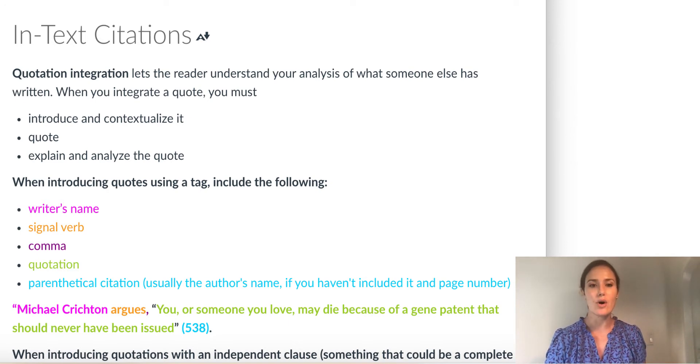When you're integrating a quote, you have to have three components. You have to introduce the quote and provide a little bit of context if necessary, tell the reader who wrote it, where it comes from if necessary. Of course, you have to include the quote itself in quotation marks. Then you have to include the parenthetical citation, what goes in parentheses, which we'll talk about in a minute.